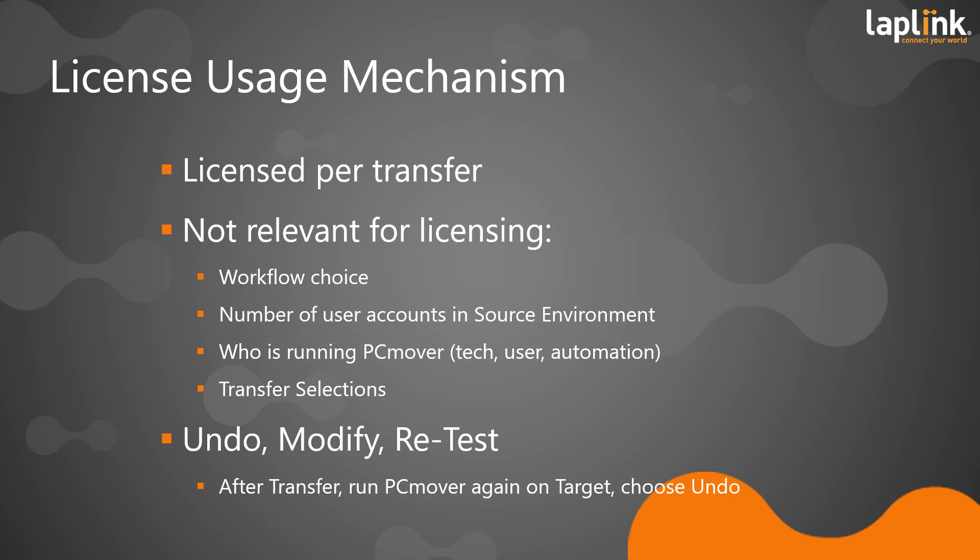There is one important thing to consider during testing: if you repeat a transfer in the exact same environment, PCMover will not consume an additional license. So if I have a pair of test machines and perform a transfer, that consumes one license. If I perform another transfer between the same two machines — same Windows, no new hardware, no re-imaging — it will re-consume the same license. When you complete a transfer and run PCMover again on the new environment, you will be presented with a new option: Undo.